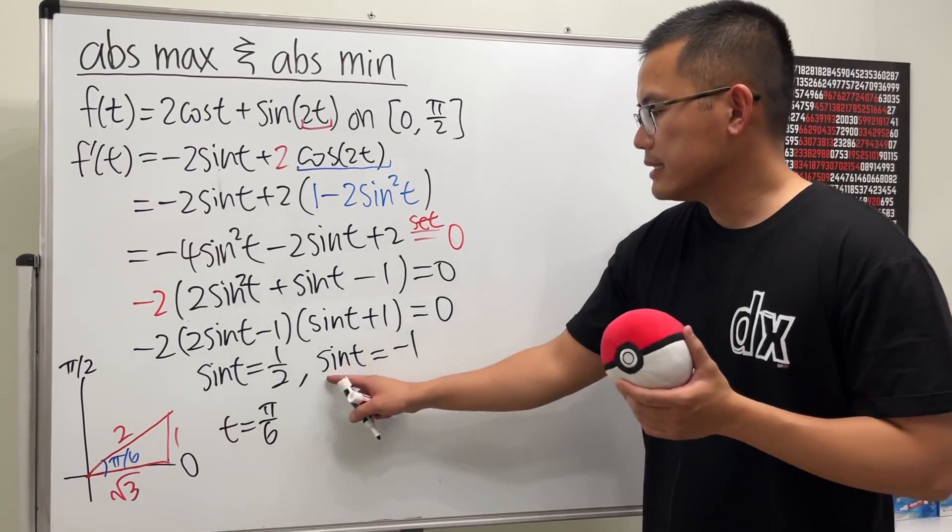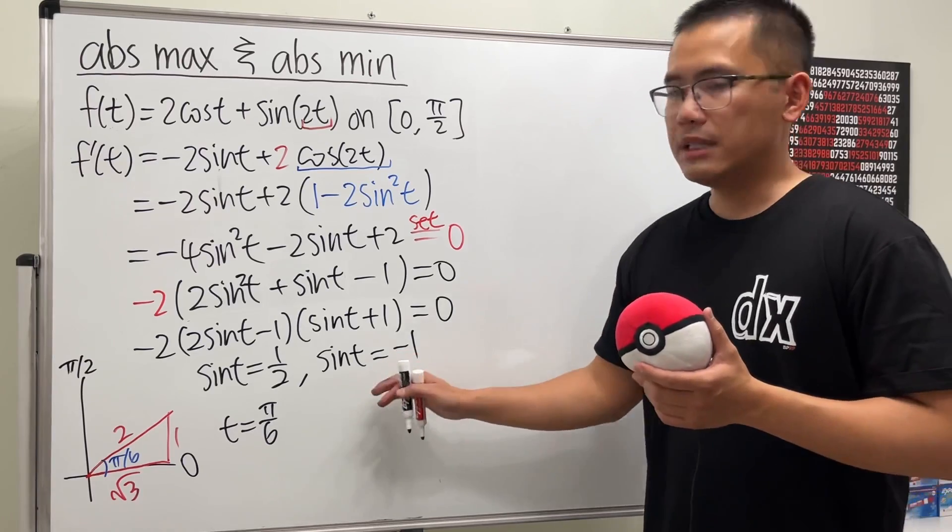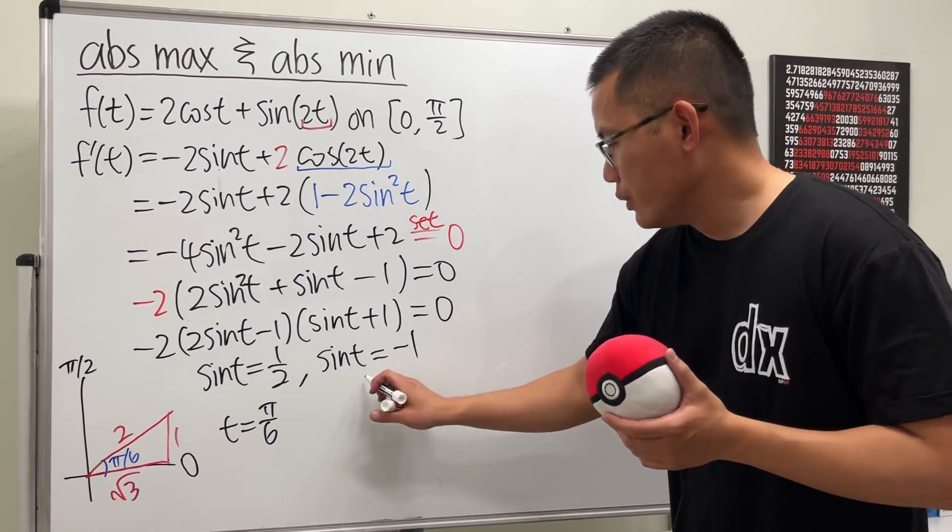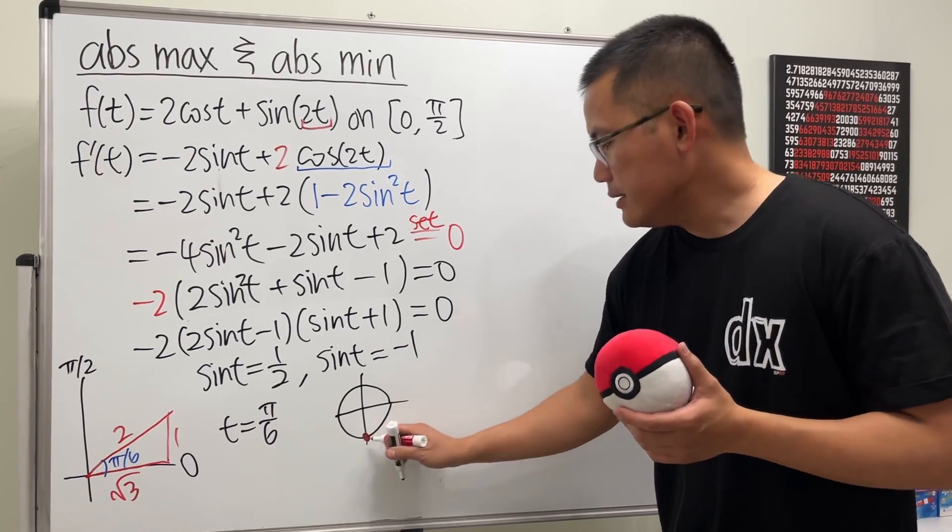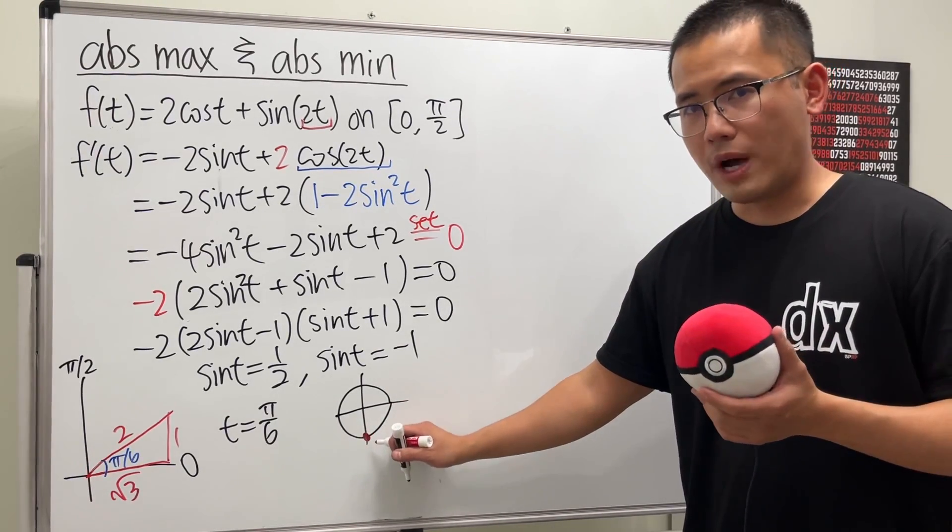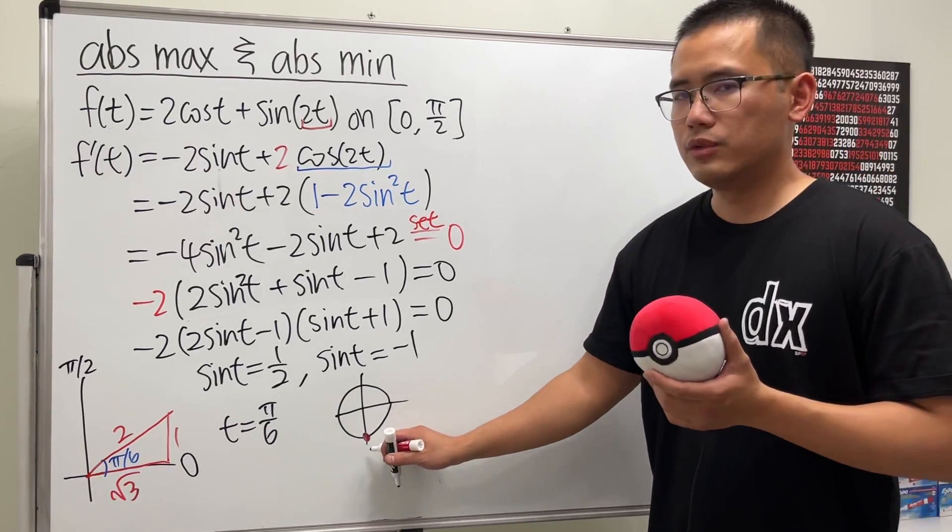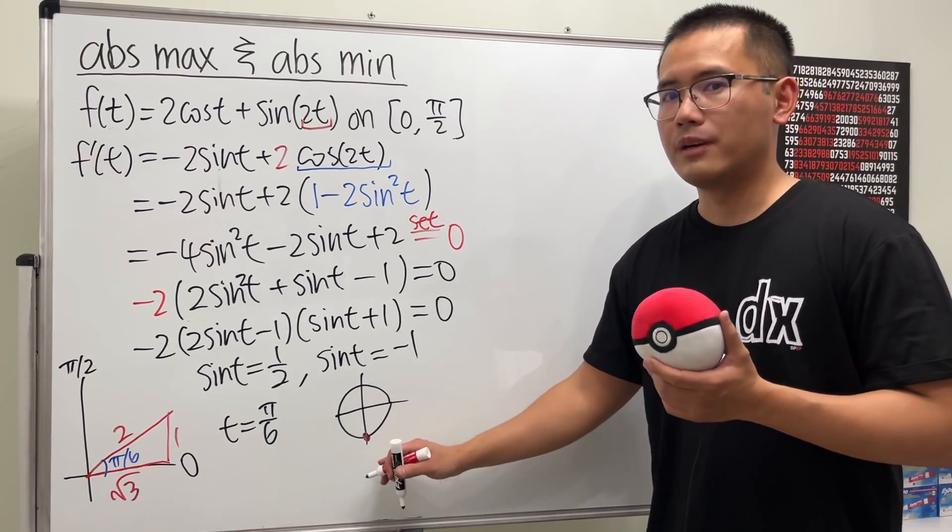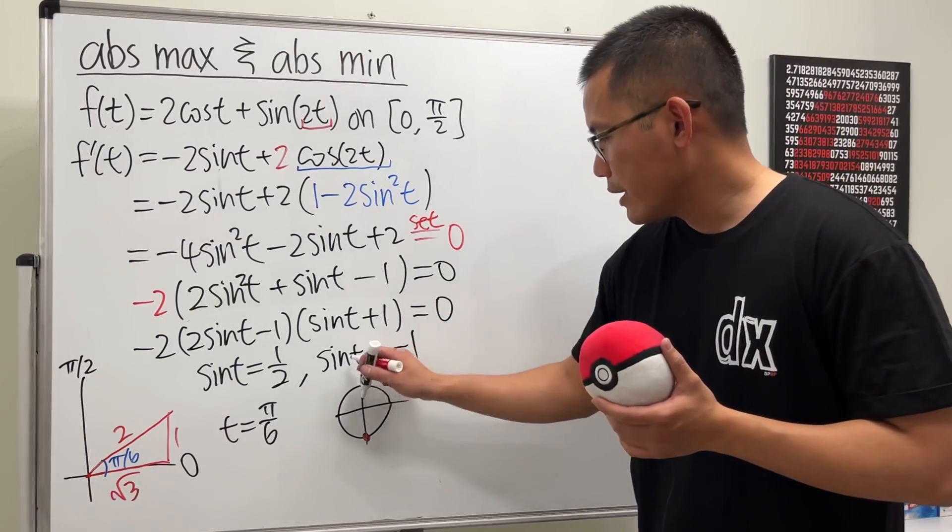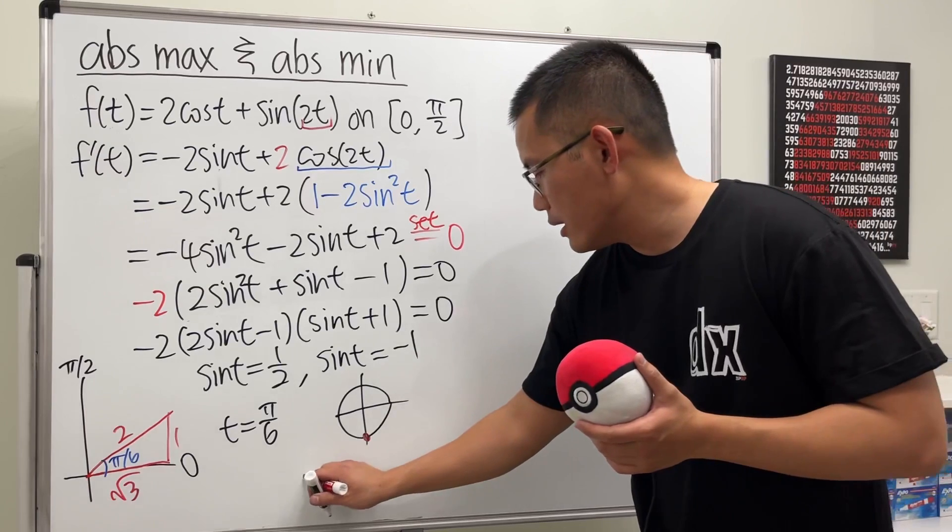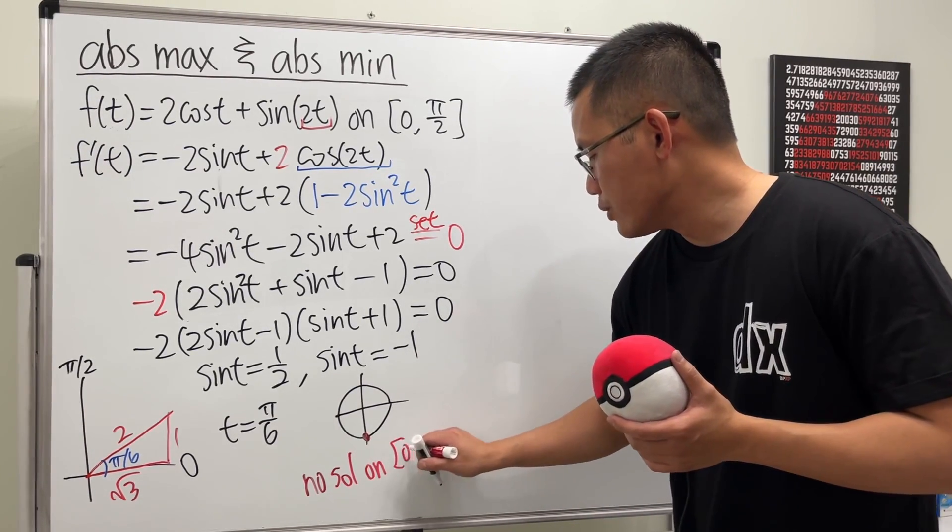And for this one, sin(t) is equal to -1. Well, sine is the y value on the unit circle. You can look at it right here. This is where the -1 is for the y value, which is the sine value. But this is 3π/2, or -π/2. So we don't have to consider that. So I will tell you, no solution on the interval 0 to π/2.